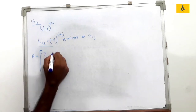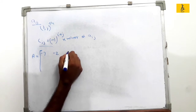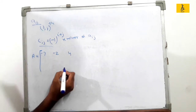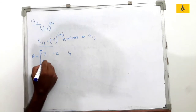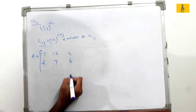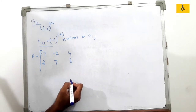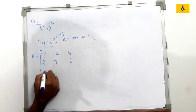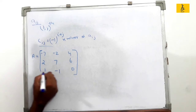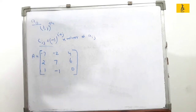The matrix A has first row: minus 7, minus 2, 4. Second row: 2, 7, 6. Third row: 2, 1, minus 1, 0. This is our matrix.